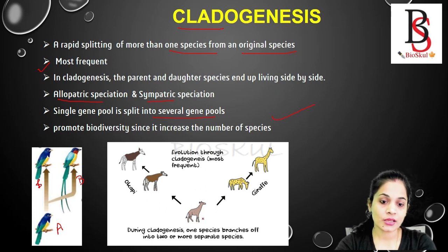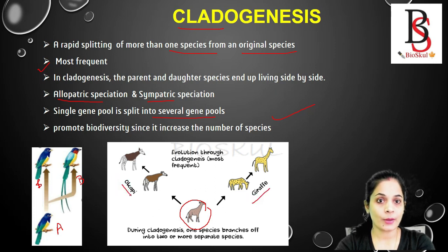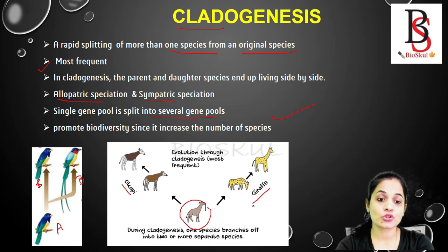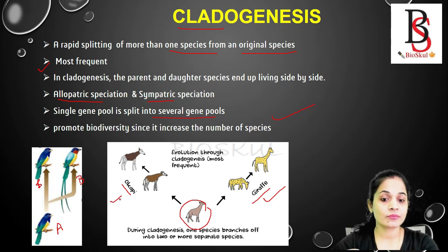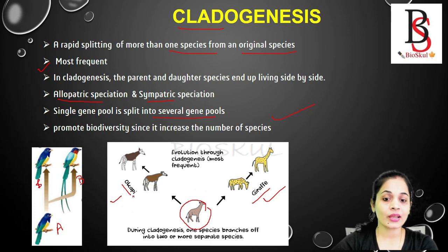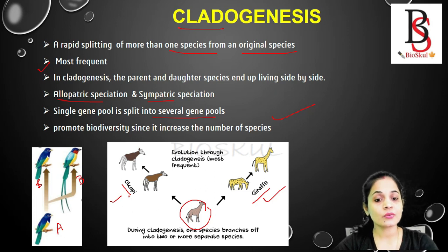For example, there is a common ancestor to both the giraffe and the okapi. Through the cladogenesis pattern of evolution, this single species is split or branched into two different species. Okapi is the forest cousin of giraffe — also known as the forest giraffe. Here, one gene pool is split into two different gene pools, and it also promotes biodiversity.